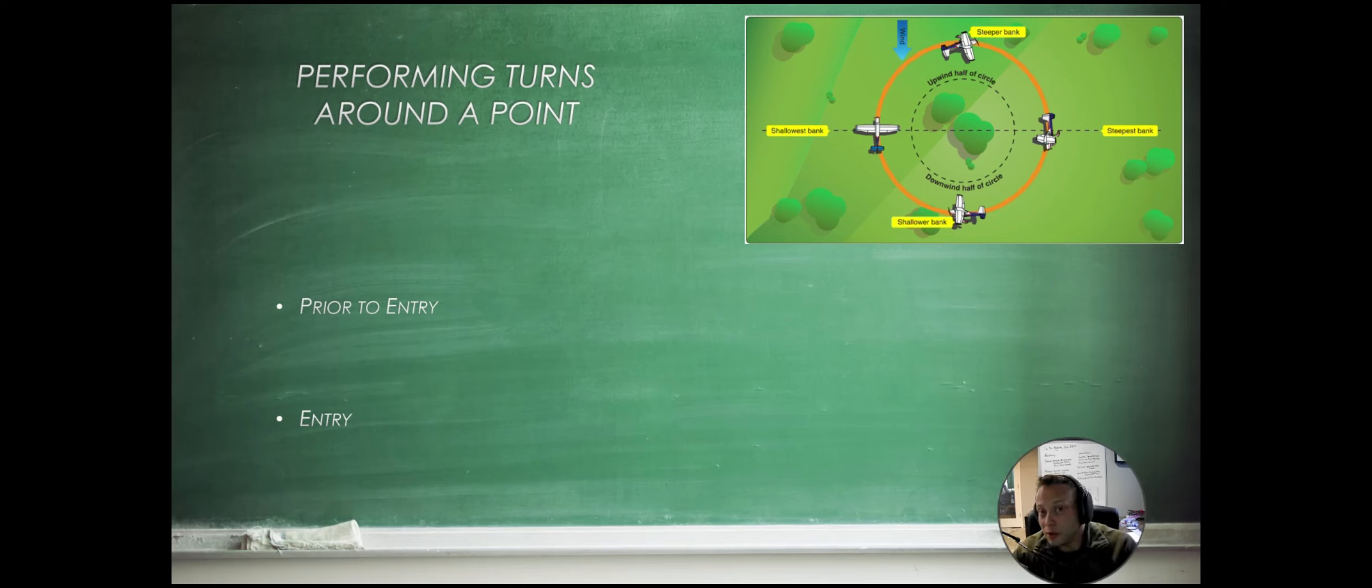Now, prior to entry, what do we do? Just like every other maneuver, we're going to execute our clearing turns. And you're going to make either a full 360 or turn left, clear the airspace, turn right, clear the airspace, and then you're good to go. And you might create a checklist to complete this maneuver, or you could do it from memory.